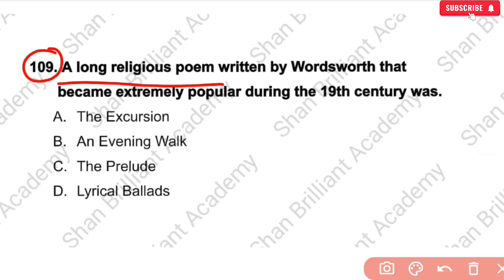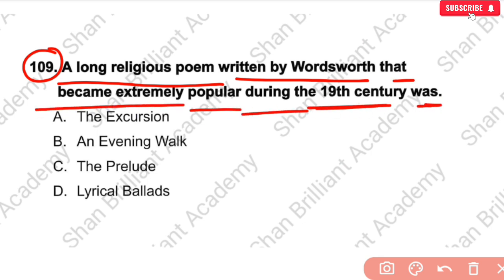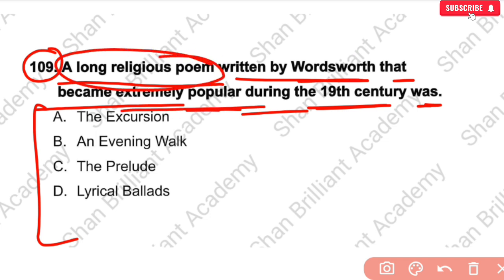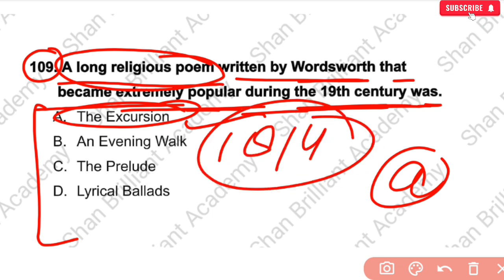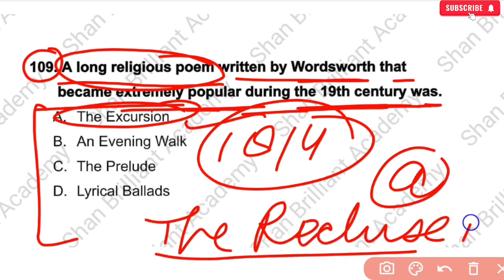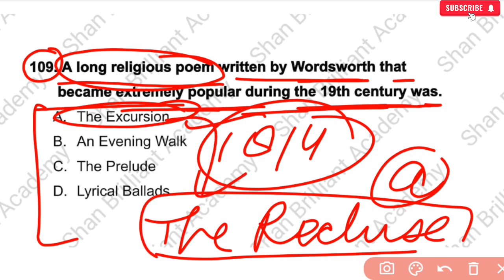MCQ No. 109: A long religious poem written by Wordsworth that became extremely popular during the 19th century was — ? The correct answer is option number A — The Excursion. It was published in 1814. The Excursion is considered the second part of The Recluse, while the Prelude is considered the first part. It was written in blank verse.